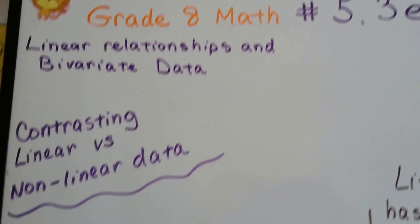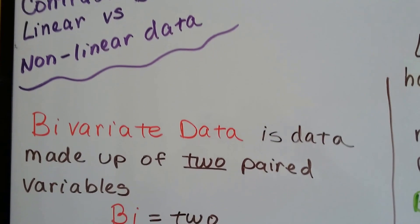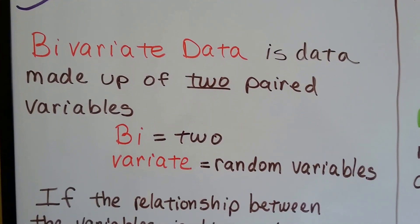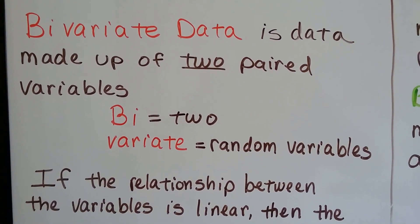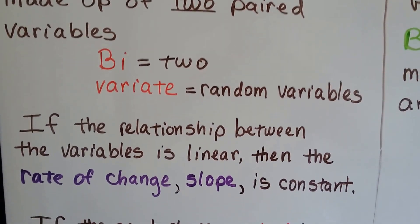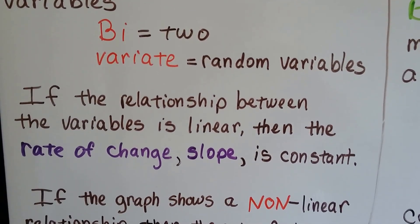Grade 8 math number 5.3e, contrasting linear versus nonlinear data. Bivariate data, as we said in the last video, is data that's made up of two paired variables. Bi means two, and variate means random variables.